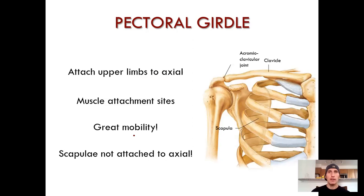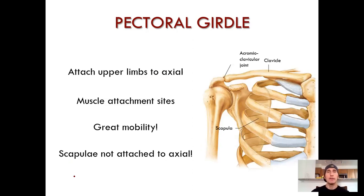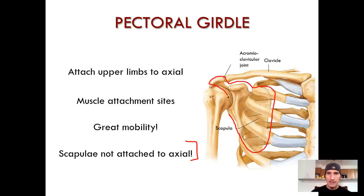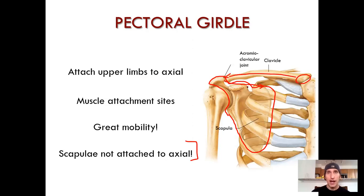You have a great range of motion at your pectoral girdle. One of the reasons — just one of many — is that your scapula is not attached to the axial skeleton. I love this fact: your scapula, your wing-like bone in the back, is not attached to anything posteriorly. There's a ton of muscles that wrap the scapula and hold it flush against your back, but it's not a bone-to-bone attachment posteriorly. Fascinating stuff.